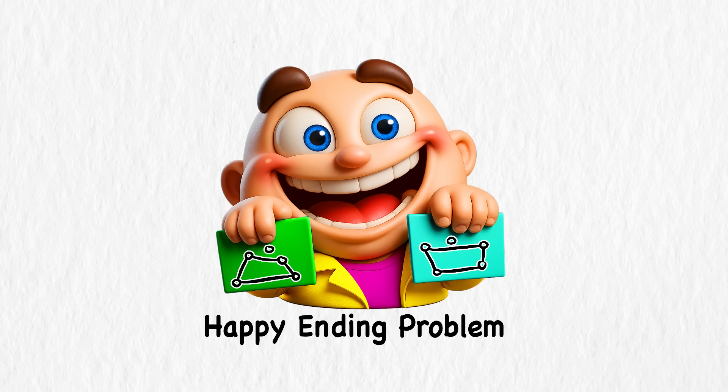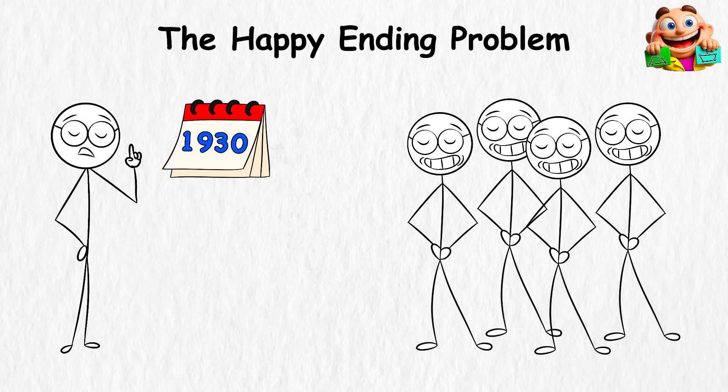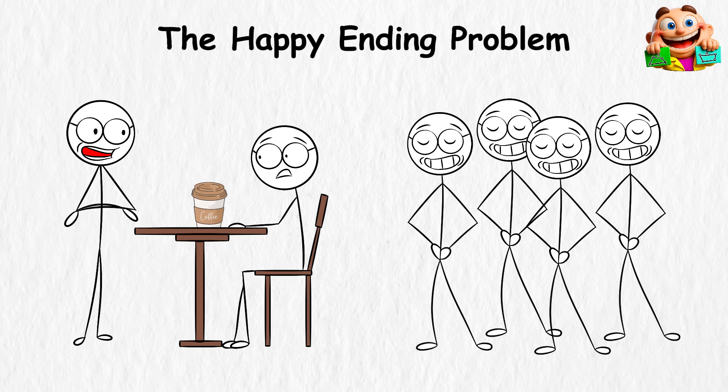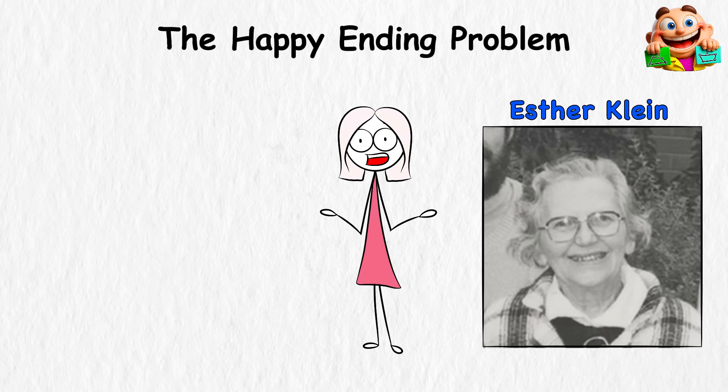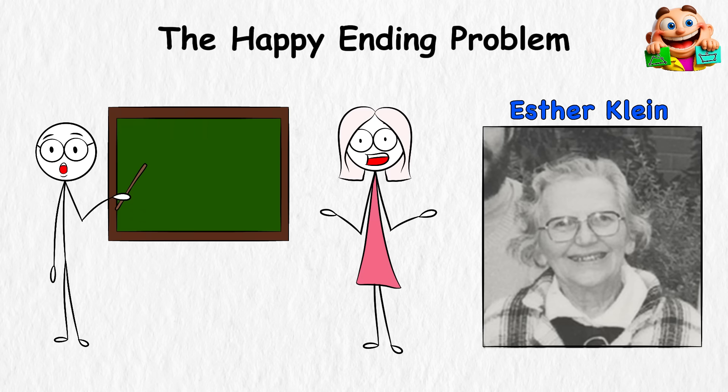The happy ending problem. Back in the 1930s, a group of Hungarian mathematicians liked tossing puzzles around in cafes. One of them, Esther Klein, asked a simple geometry question. If you put five points anywhere on a flat surface, are you guaranteed to find four that form a neat convex quadrilateral?